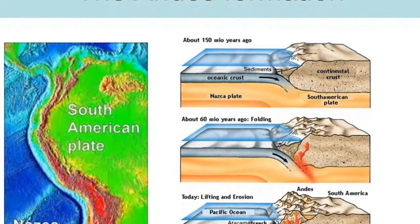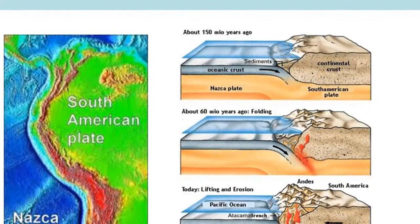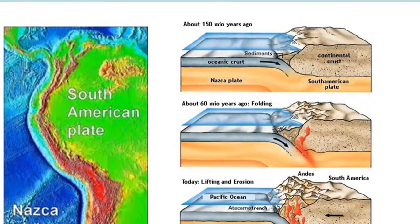In this environment, three distinct structural elements of a developing mountain belt gradually take form: 1. Volcanic arcs, 2. Accretionary wedges, and 3. Forearc basins.